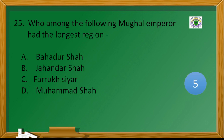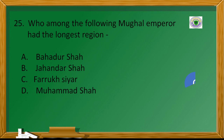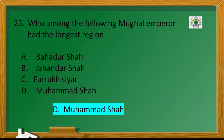Last question: who among the following Mughal emperors had the longest reign? Answer D: Muhammad Shah. Please subscribe our channel and like and share. Thanks for watching this video.